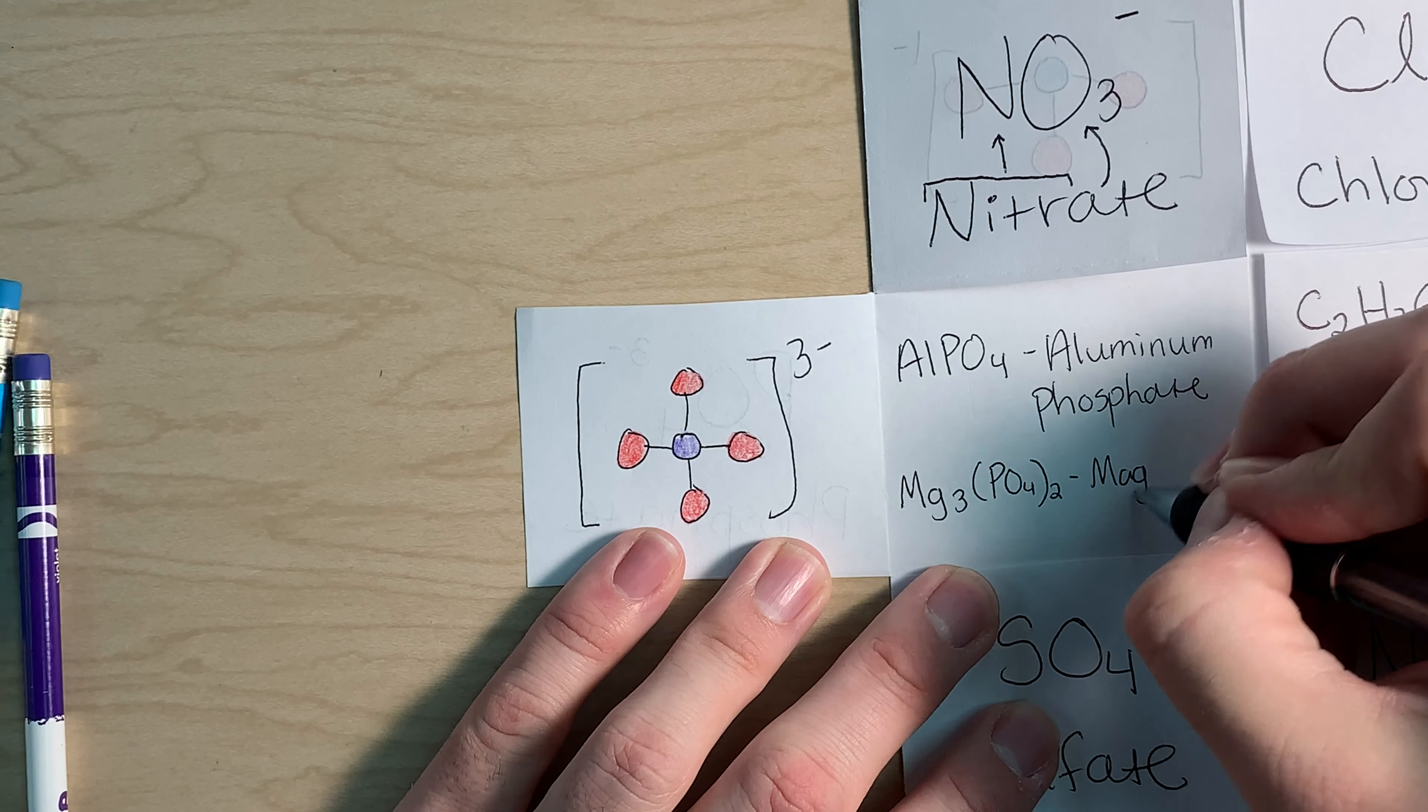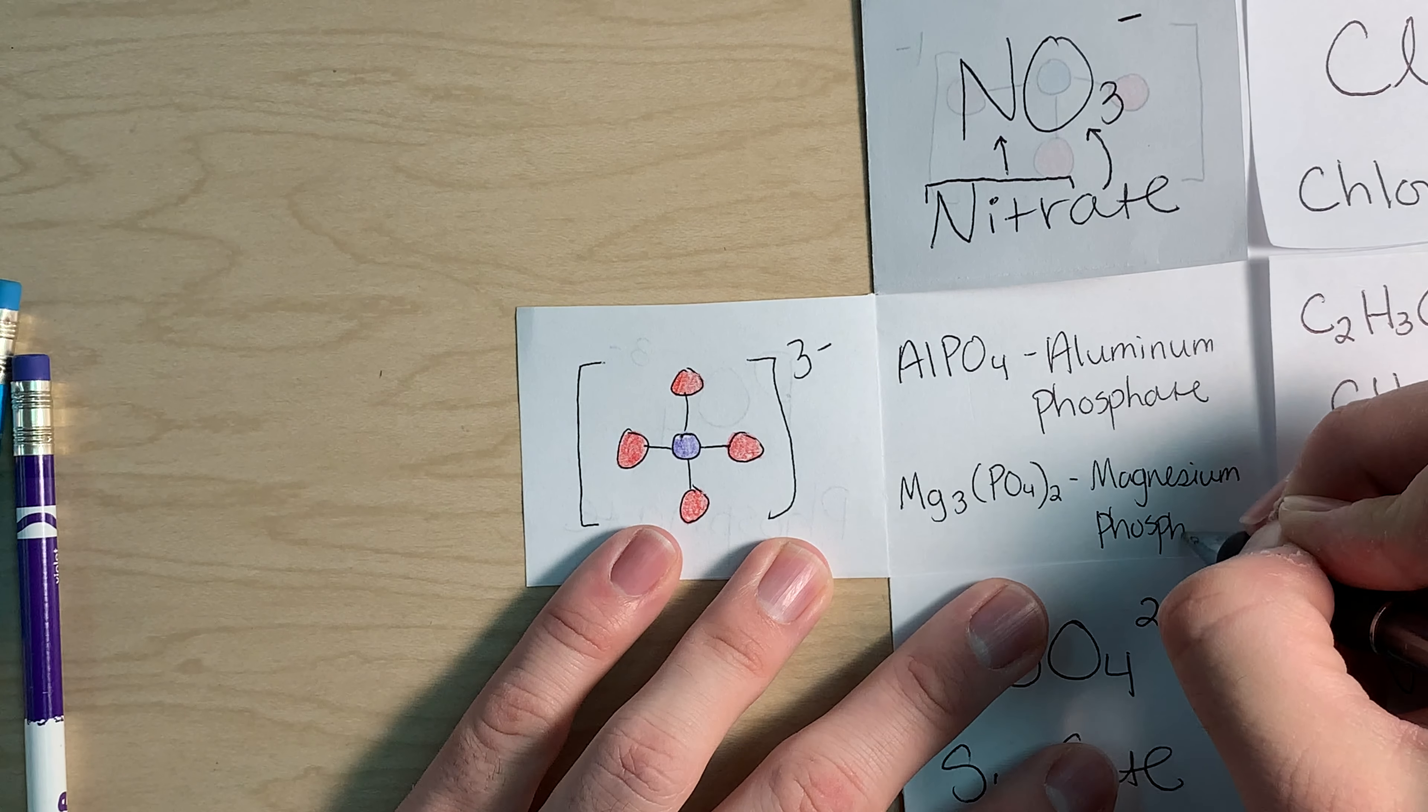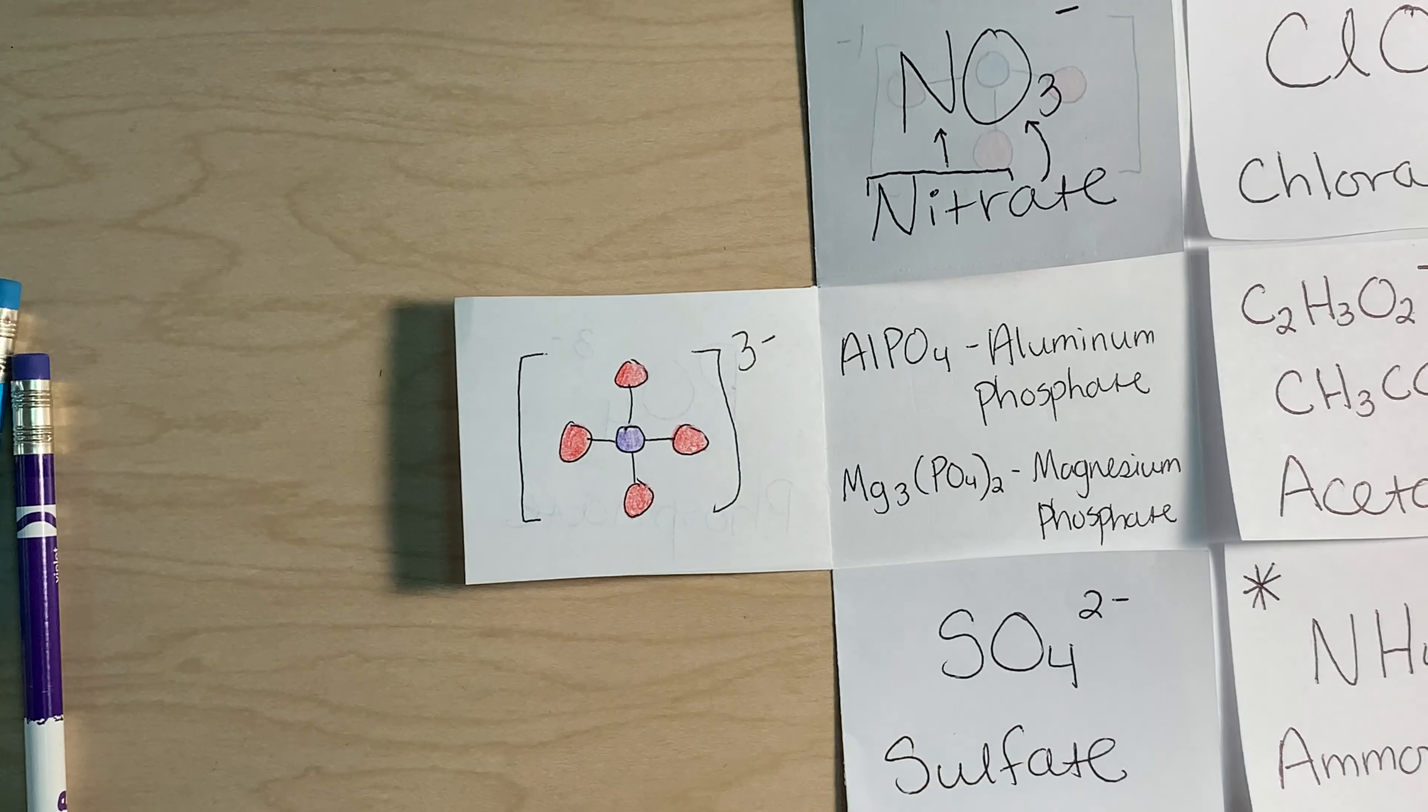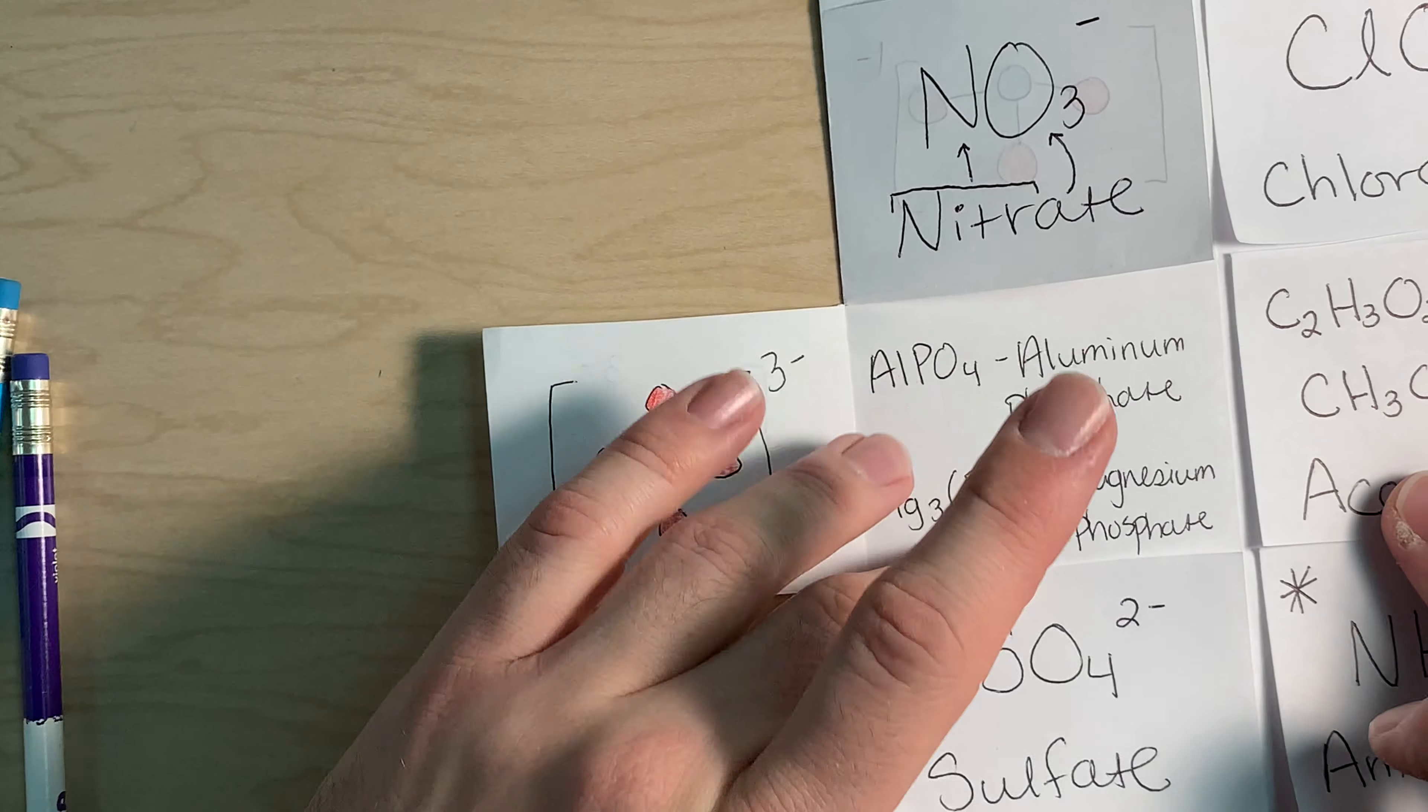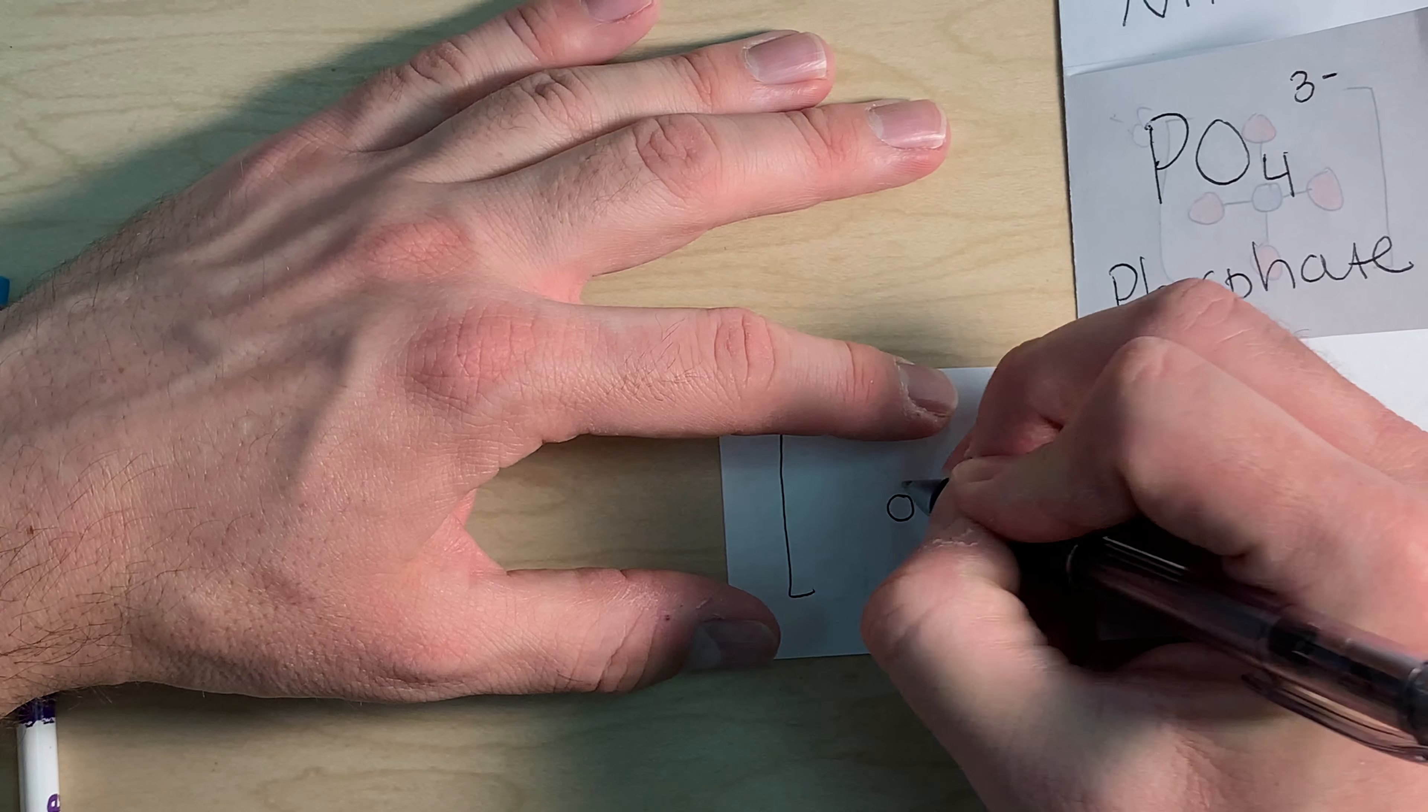AlPO4 is aluminum phosphate. Mg3(PO4)2. Now, some of these look a little crazy, but don't freak out because this is just magnesium and phosphate. So the PO4 acts as one thing, so we name it as one thing. It gets named by itself, PO4. All right, down at the bottom.